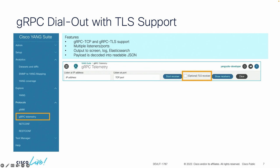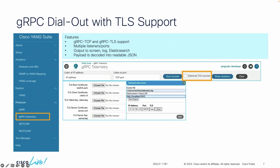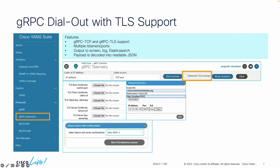Specifically for the TLS portion, you can use this optional flag to indicate that you would like to use TLS. You'll then have the opportunity to upload your keys and certificates to make this a secure connection. Here you can define your receivers and then select the device you want to use. An additional feature is that we can actually have multiple receivers, which you can also define within Yang Suite.